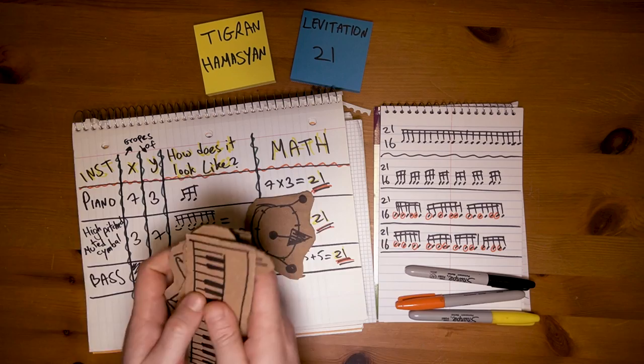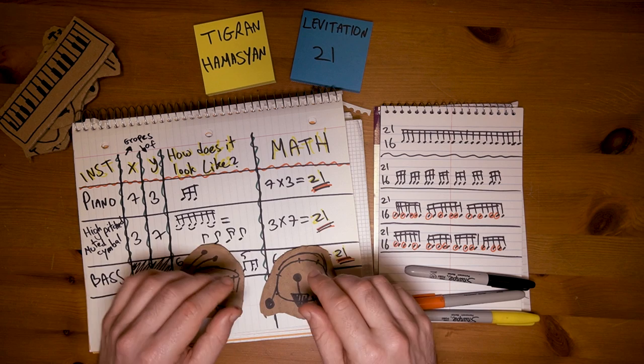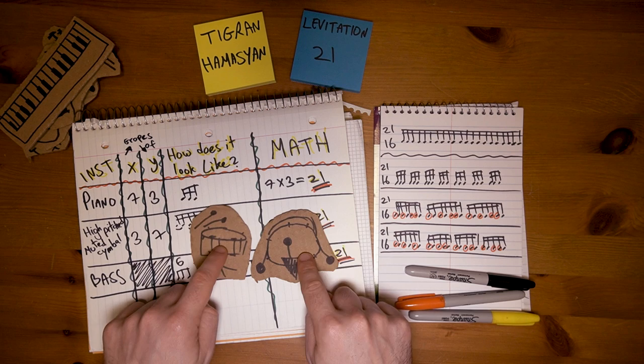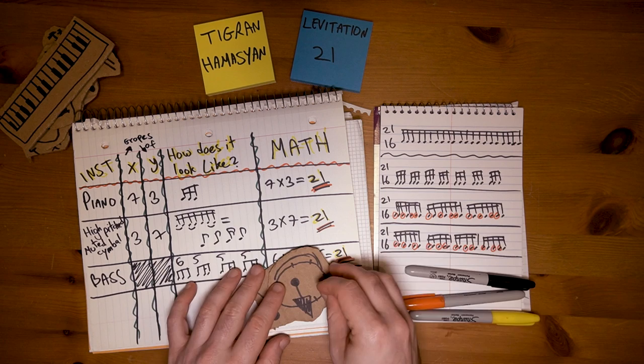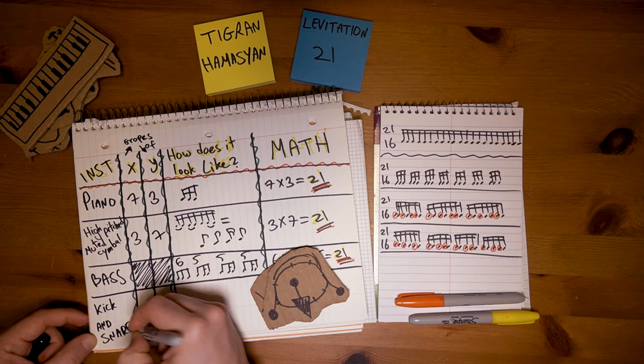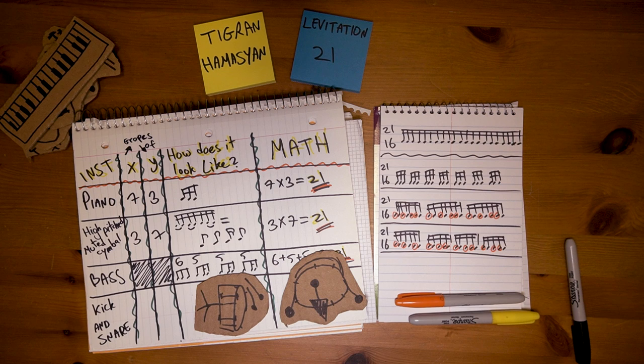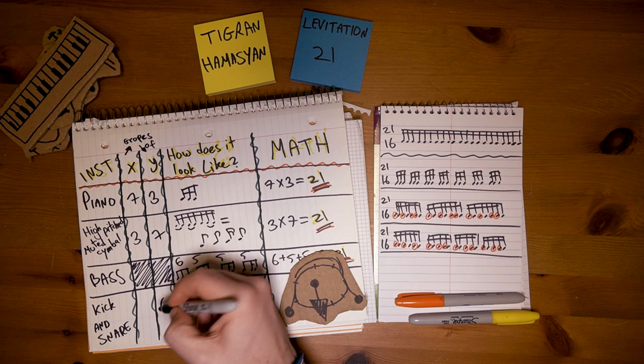Now we get to the tricky part: the kick and the snare. Though they sound pretty chill, they're the most interesting factor here for me. Basically they play one hit every six sub beats, or groupings of six, or a dotted quarter note. It's all the same.